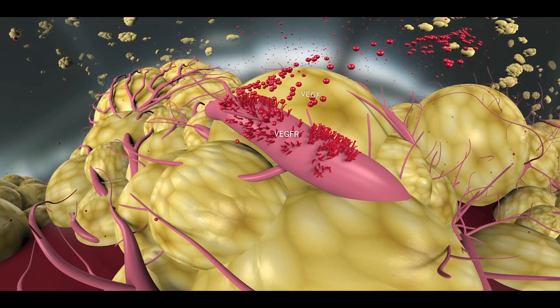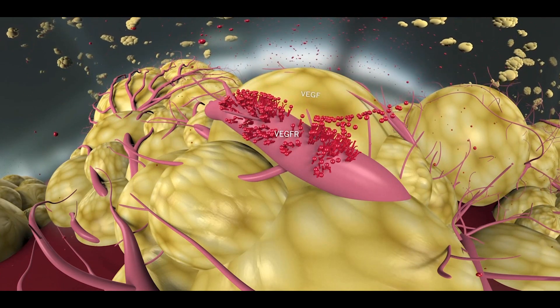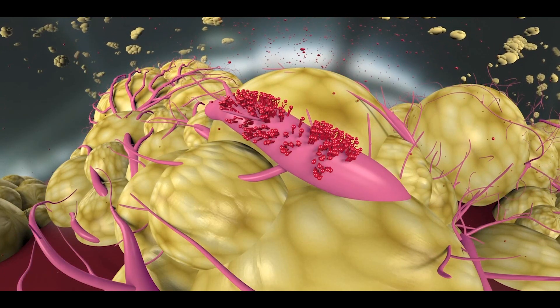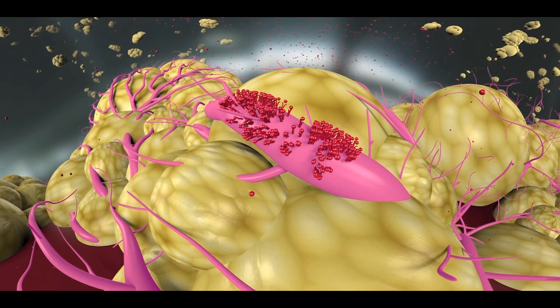VEGF binds to the VEGF receptor, a tyrosine kinase receptor located on endothelial cells that promotes the activation, proliferation, and migration of these cells.